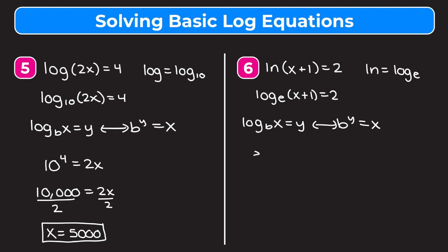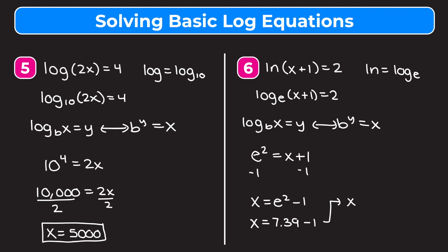Converting log base e of x plus 1 equals 2 into exponential form: the base e is raised to the second power and set equal to x plus 1. Subtracting 1 from both sides gives x equals e squared minus 1. This is the exact answer. Using a calculator, e squared is approximately 7.39, so subtracting 1 gives x is approximately 6.39. Both the exact form and the approximation are acceptable answers.